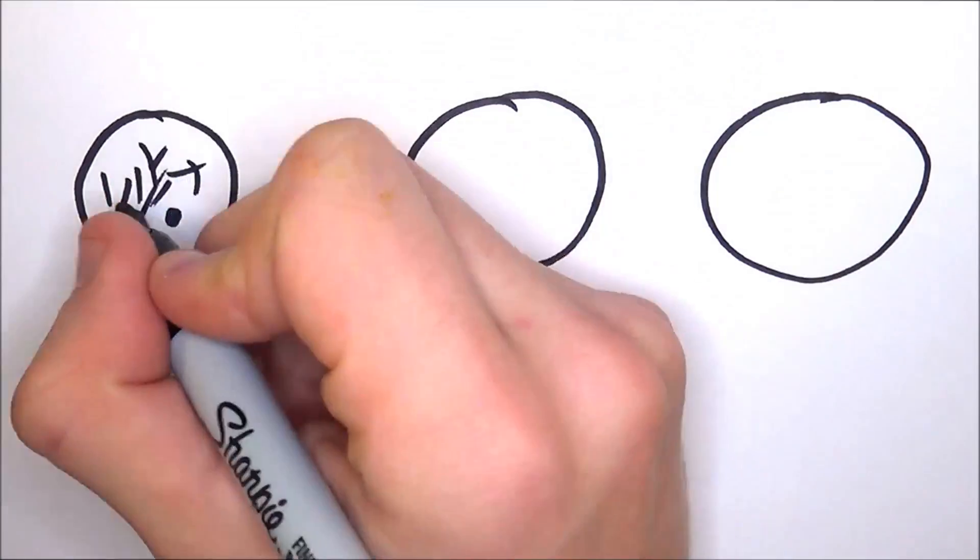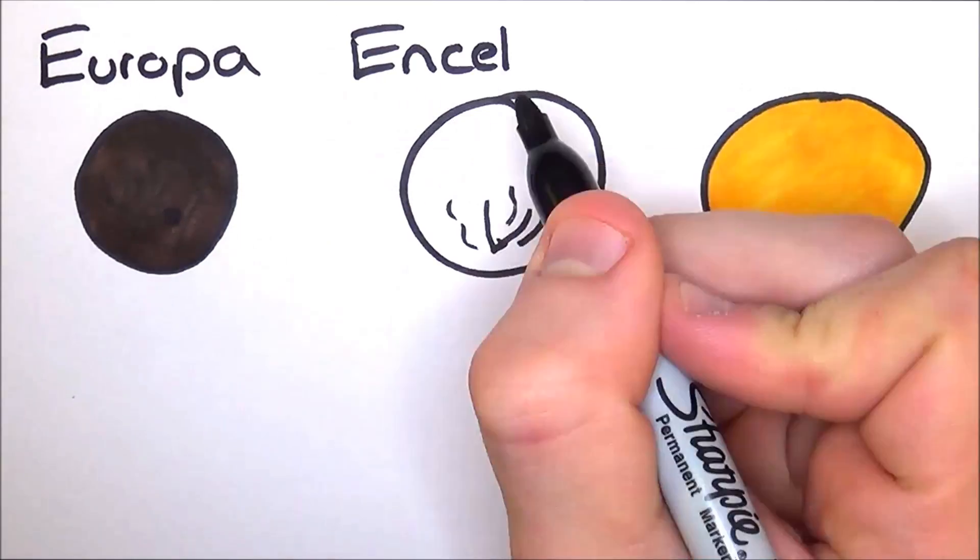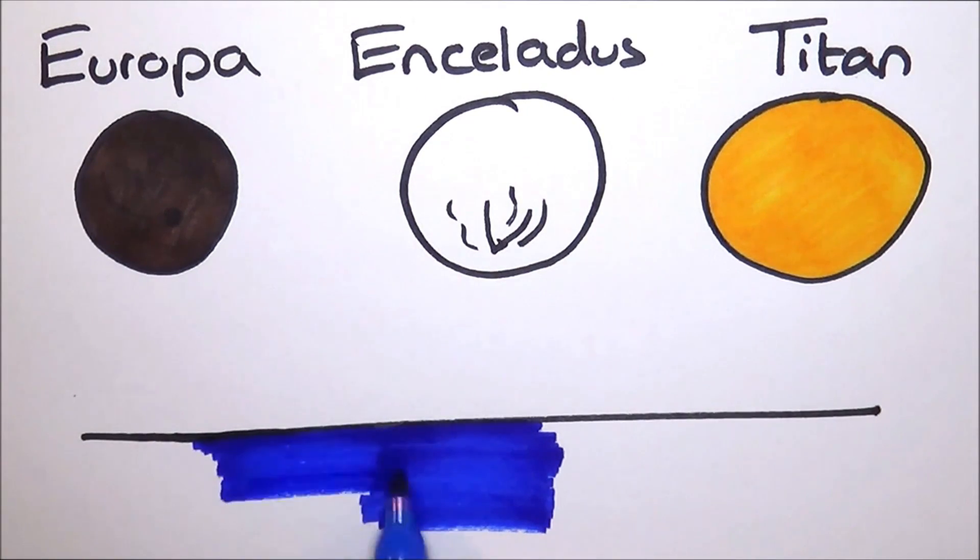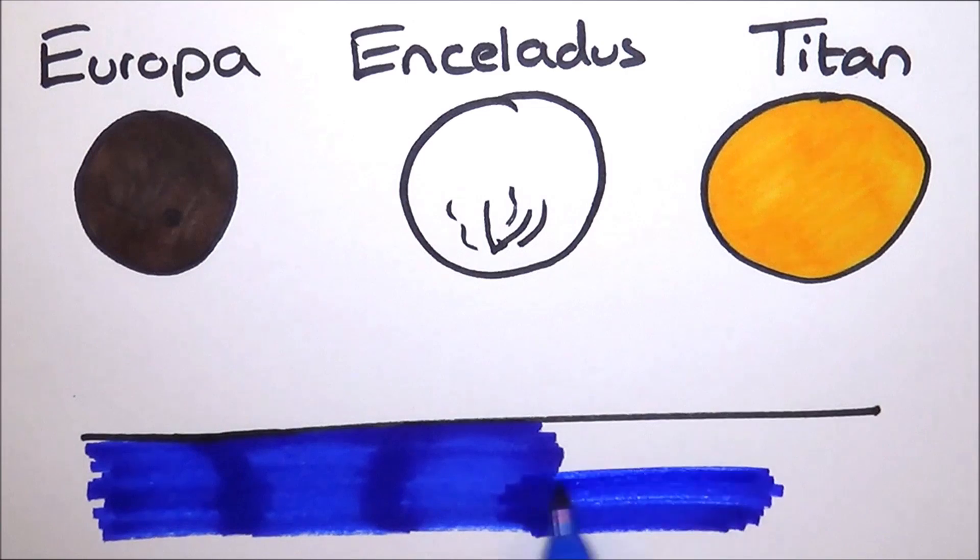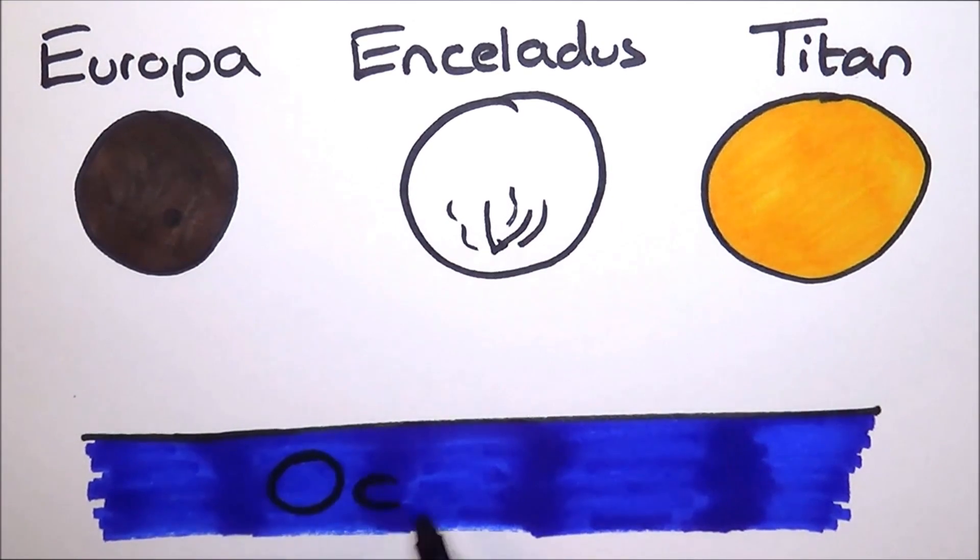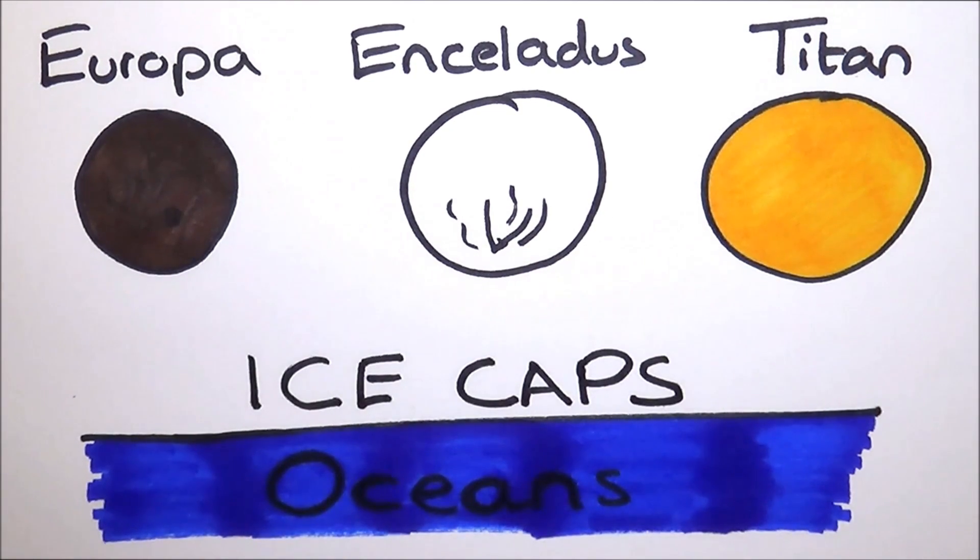Such as some of the moons of Jupiter and Saturn, the pressure the water is under keeps it in its liquid form. These moons are Europa from Jupiter, and Enceladus and Titan from Saturn. What makes these moons so good is that they have oceans of liquid water underneath thick ice caps.